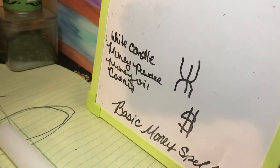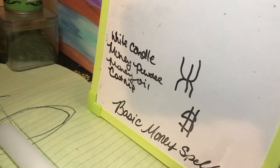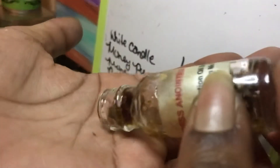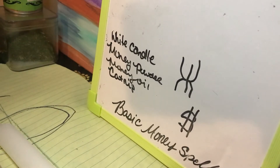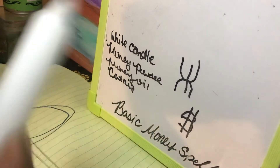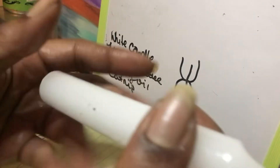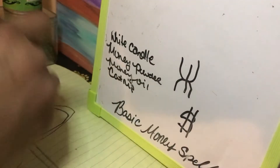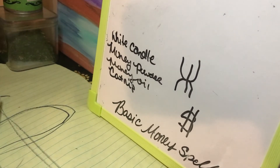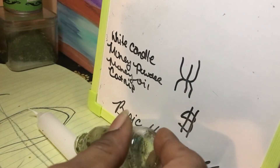Then you want to rub your candle down with your prosperity oil. I usually pour it into my receiving hand — I'm right-handed, so I pour the oil into my left hand. Then take the candle and get all that oil on it.